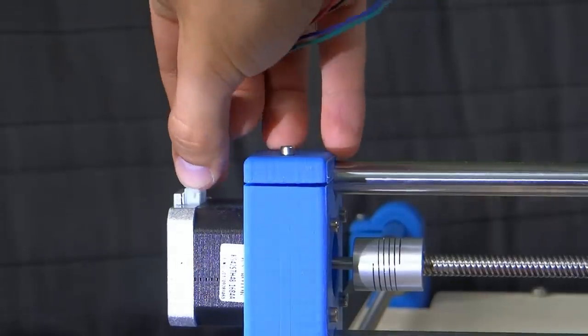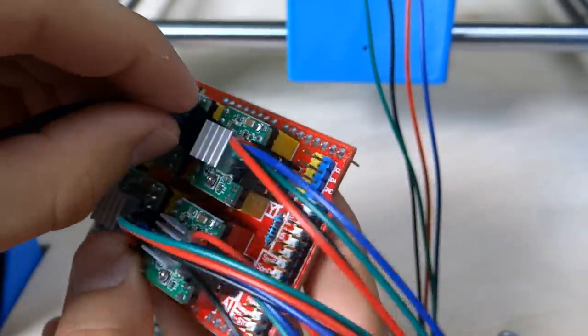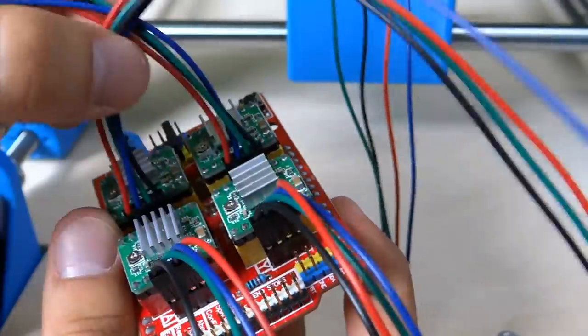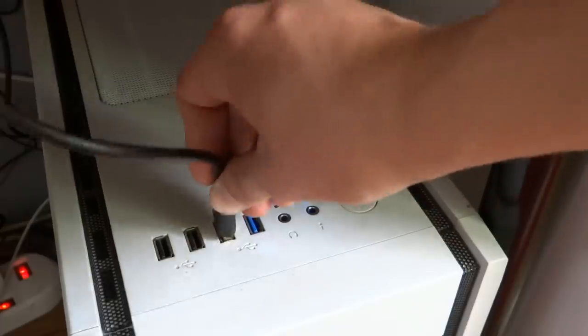There is only one way to connect motor cables to the motors, so you should end up with X and Z motors plugged in like that with red cable on the left, and both y-axis motors with red cable on the right.